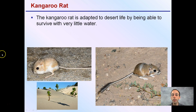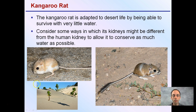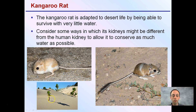Also consider the kangaroo rat. This long-tailed kangaroo rat is adapted for desert life and is able to survive with very little water. Consider some ways in which its kidneys might be different from the human kidney to allow it to conserve as much water as possible in a very arid environment. You might say it can just get water from plants, but there are not many plants available in the desert. So consider how the kidneys of the kangaroo rat may differ from a human kidney to help it live where water is very scarce.